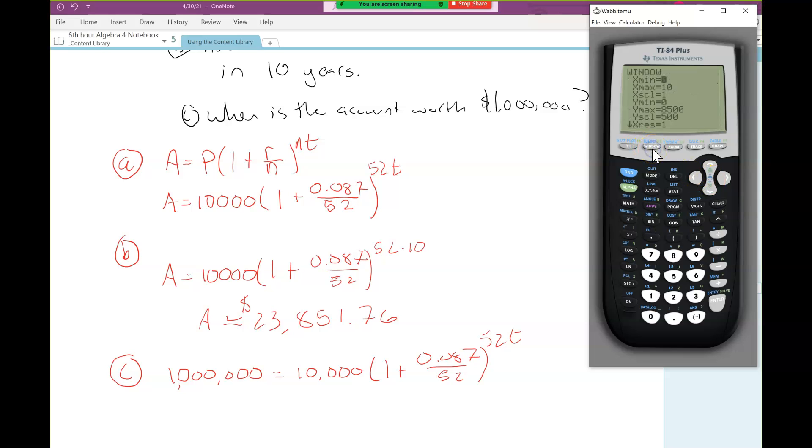In one spot I'm going to put $1 million, that's 1 with six zeros. Then we have 10,000 times (1 + 0.087/52) to the 52 times x. Then I'll set my window. Here again we're going to have to guess at our x max. It took 10 years to get to 23,000. How many years to get over a million? Probably like 50. It's always better to overestimate than underestimate. Let's do 100, that's definitely going to be more than enough.